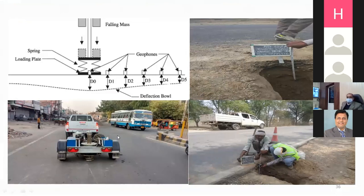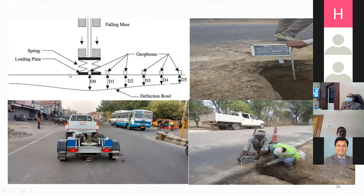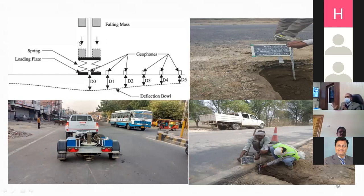One of my students did a project on FWD with one industry partner in Haryana. The FWD principle: there is a base plate of a particular diameter — it can be trailer-mounted or vehicle-mounted (in-bound FWDs are also available), towed at 30–40 km/h. A weight falls from a certain predetermined height, generating a peak impulse load. The difference between Benkelman Beam Deflection and FWD is the type of loading — BBD uses a standard axle truck as static load for initial, intermediate, and final deflection readings, while FWD is an impulse loading device.